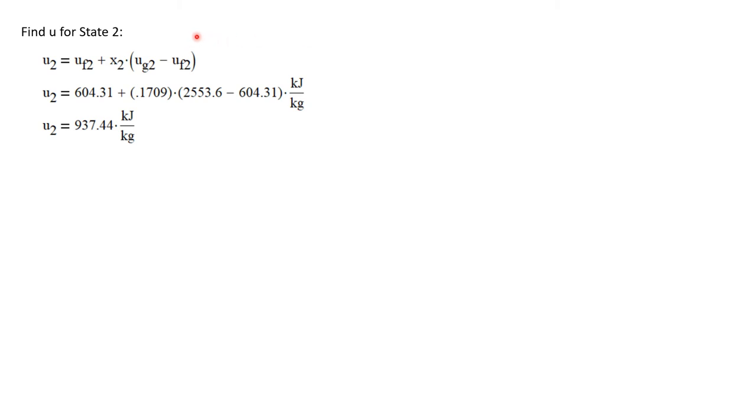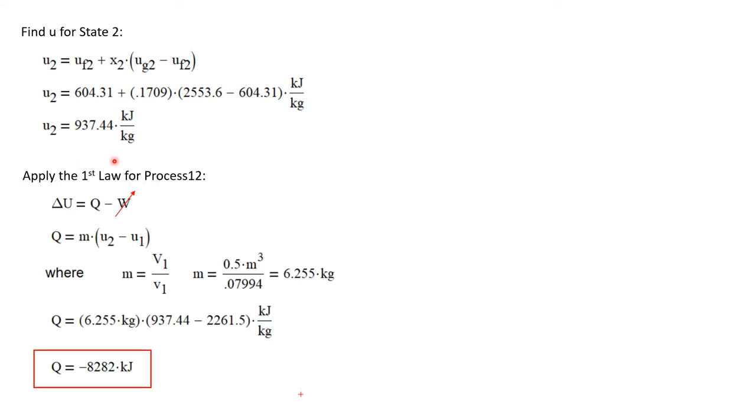Now that we know the quality of state 2, we can calculate the internal energy. The internal energy at state 2 is u_f plus the quality times u_g minus u_f. The 2 here indicating that all of these properties are taken as state 2 properties. I can insert those values into this equation and I calculate that u_2 is 937.44 kilojoules per kilogram.